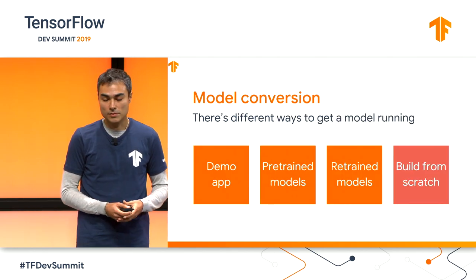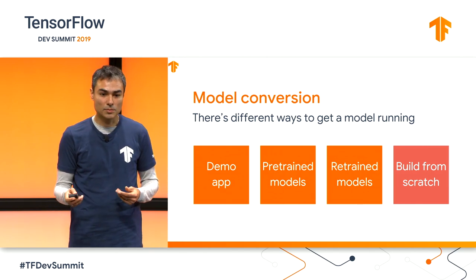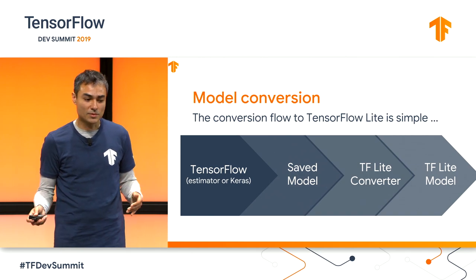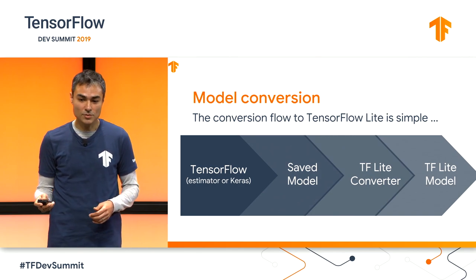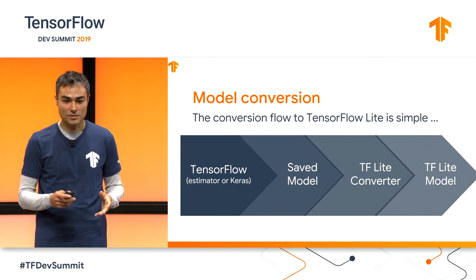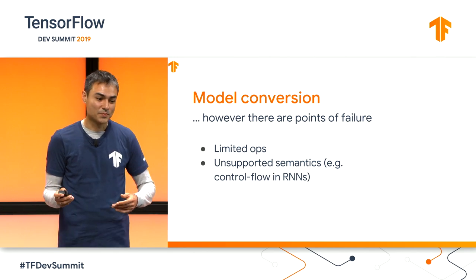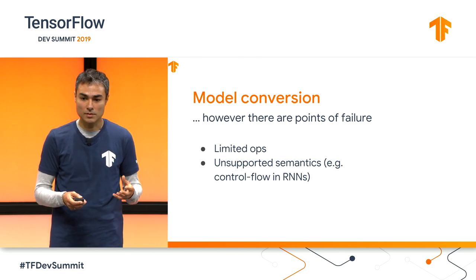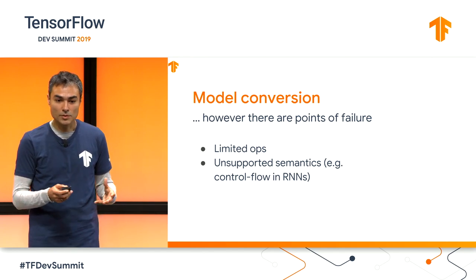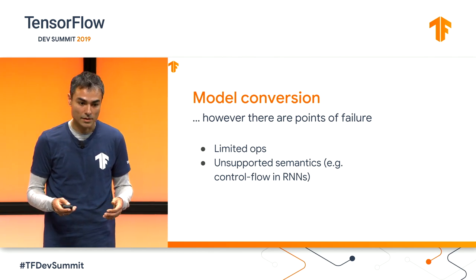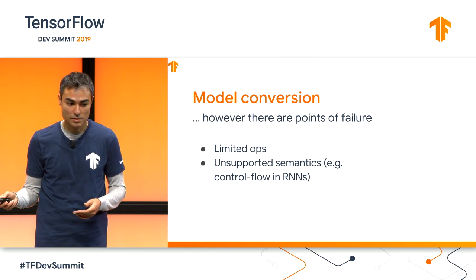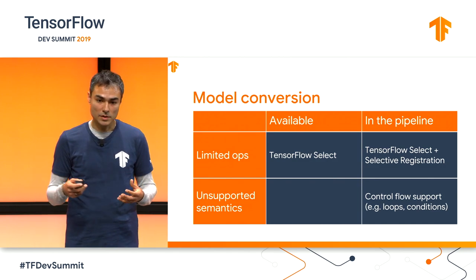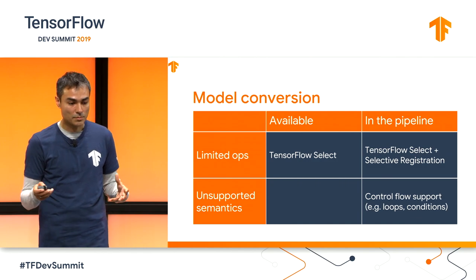There are different ways of getting up and running in TensorFlow Lite, but at the end of the day you will most likely want to train a model in TensorFlow and convert it to TensorFlow Lite. The flow is logically simple — you train in TensorFlow, get a saved model, use the TensorFlow Lite converter, and get a TensorFlow Lite model that you can execute on different kinds of devices. However, there are some points of failure. TensorFlow Lite made the decision to take a subset of TensorFlow ops and optimize those, which means we don't have all the same hundreds of operations that TensorFlow has.